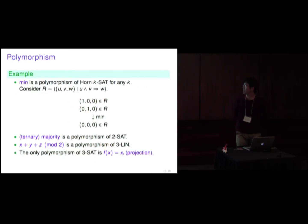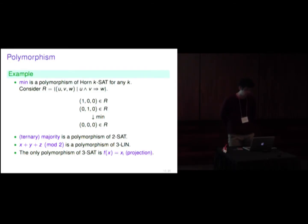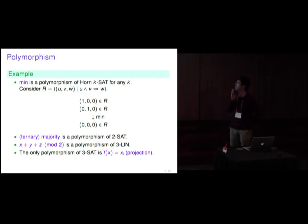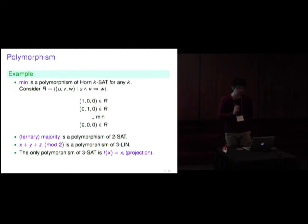Let's see some examples. The mean operation is a polymorphism of Horn-k-SAT for any K. Consider relation R of tuples (U, V, W) such that U and V implies W. Then (1, 0, 0) and (0, 1, 0) are in R, and if we take the mean operation, we get (0, 0, 0), which is in R. The ternary majority operation is a polymorphism of two-SAT. X plus Y plus Z mod 2 is a polymorphism of three-LIN. The only polymorphism of three-SAT is just a projection.